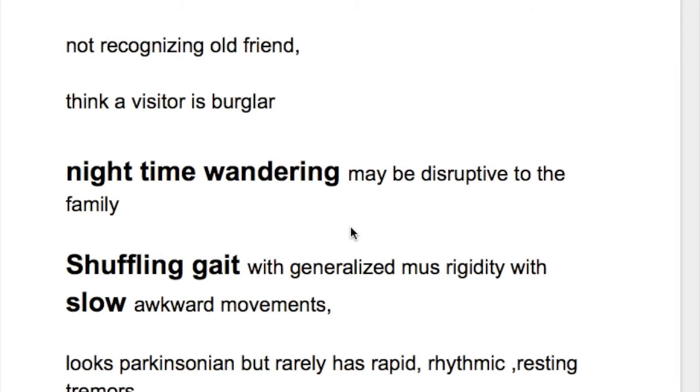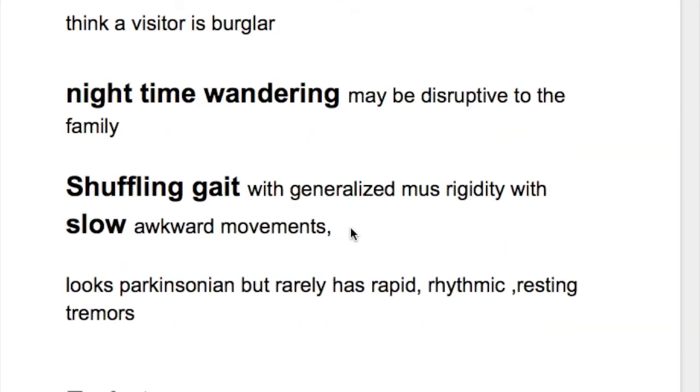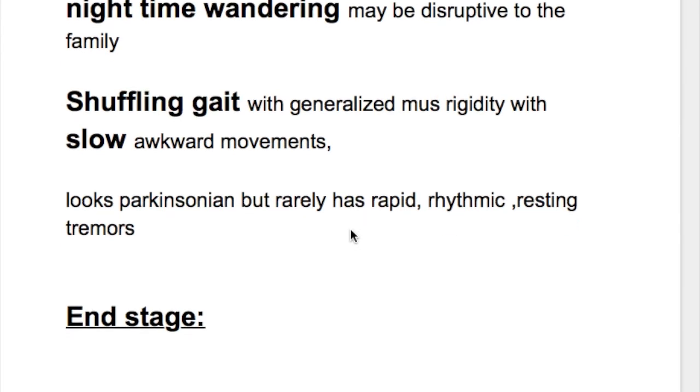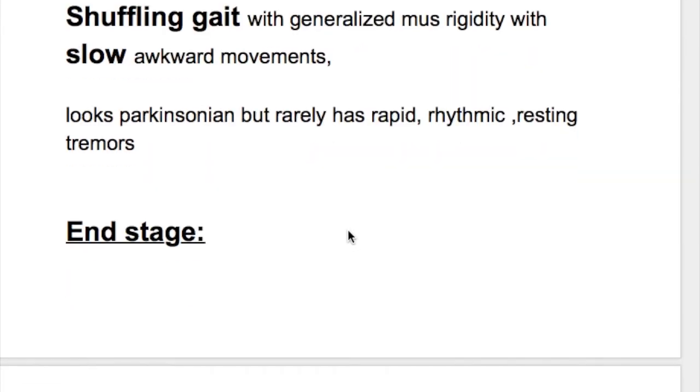Nighttime wandering may be disruptive to the family. Shuffling gait is present with generalized muscle rigidity and slow awkward movements. This looks parkinsonian but rarely has rapid, rhythmic resting tremors.